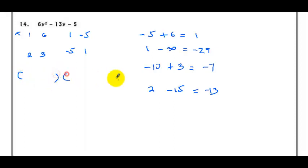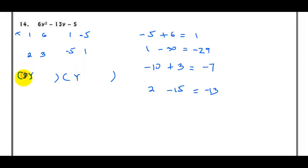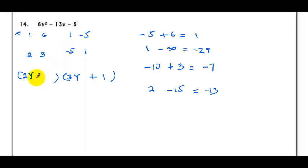Our factors will look like this. Using y in each binomial, bring down the 2 and the constant 1. The values cross: 3 goes here and −5 goes here, which becomes minus 5. So this is our correct factored form.